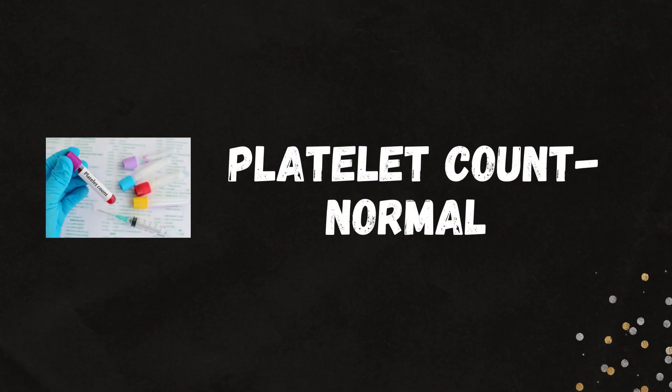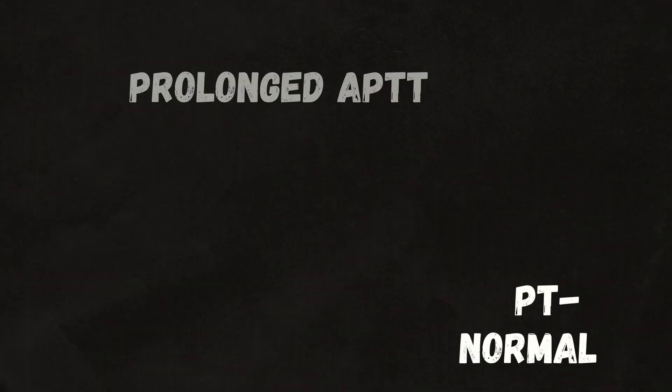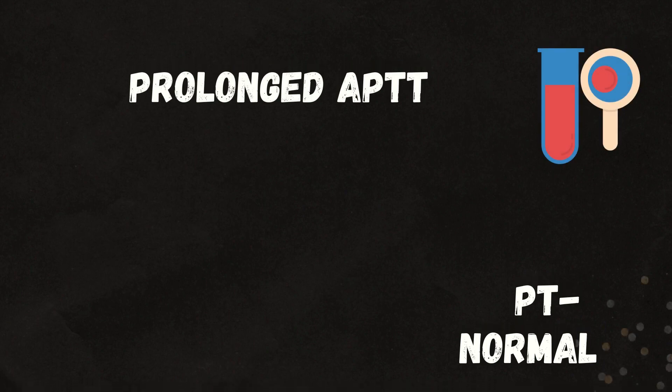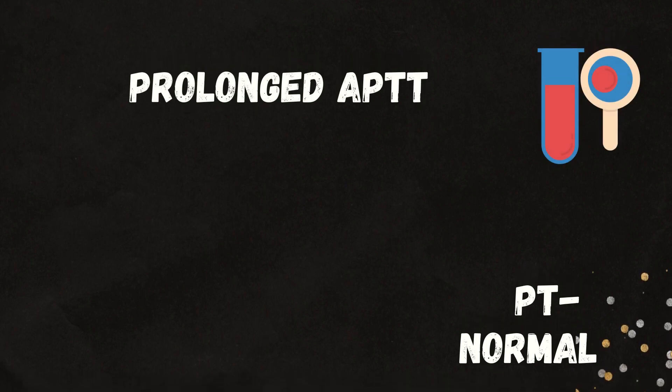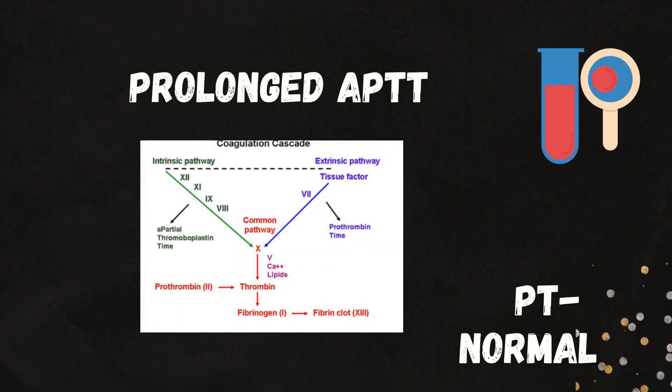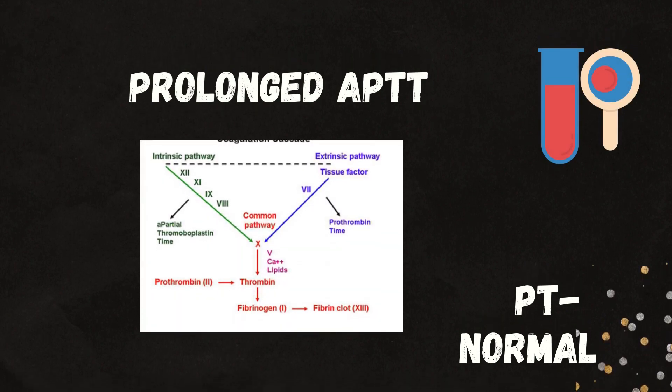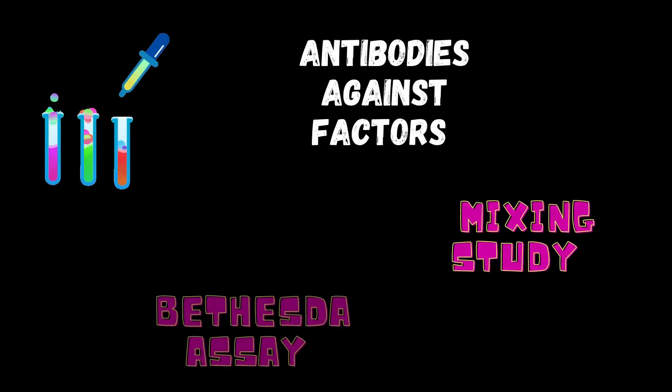Coming to the diagnosis: platelet count is normal, as clotting factors are deficient here and there is no abnormality in platelets per se. As discussed, APTT is prolonged. Prothrombin time is normal, as factors of the extrinsic pathway are not deficient.